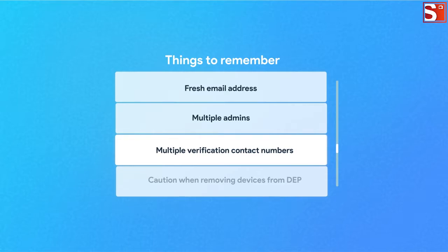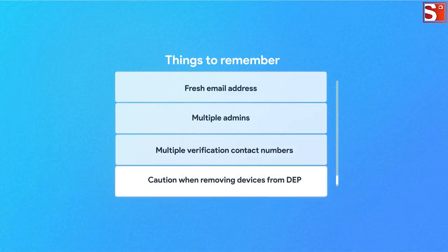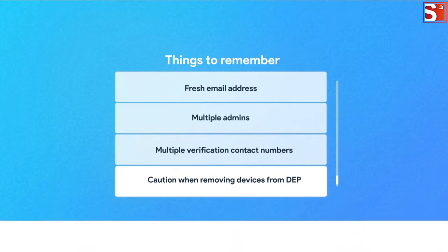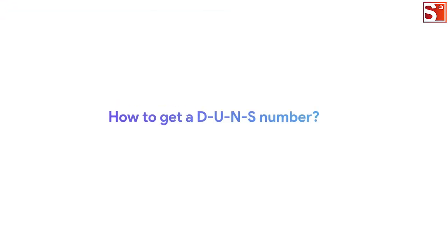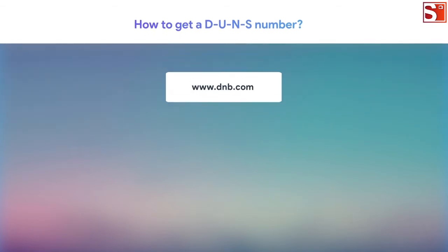Provide more than one contact number for OTP verification in case one gets lost. Also note that a device that was enrolled in DEP and then removed cannot be added again directly — you need Apple Configurator to get it back into DEP.